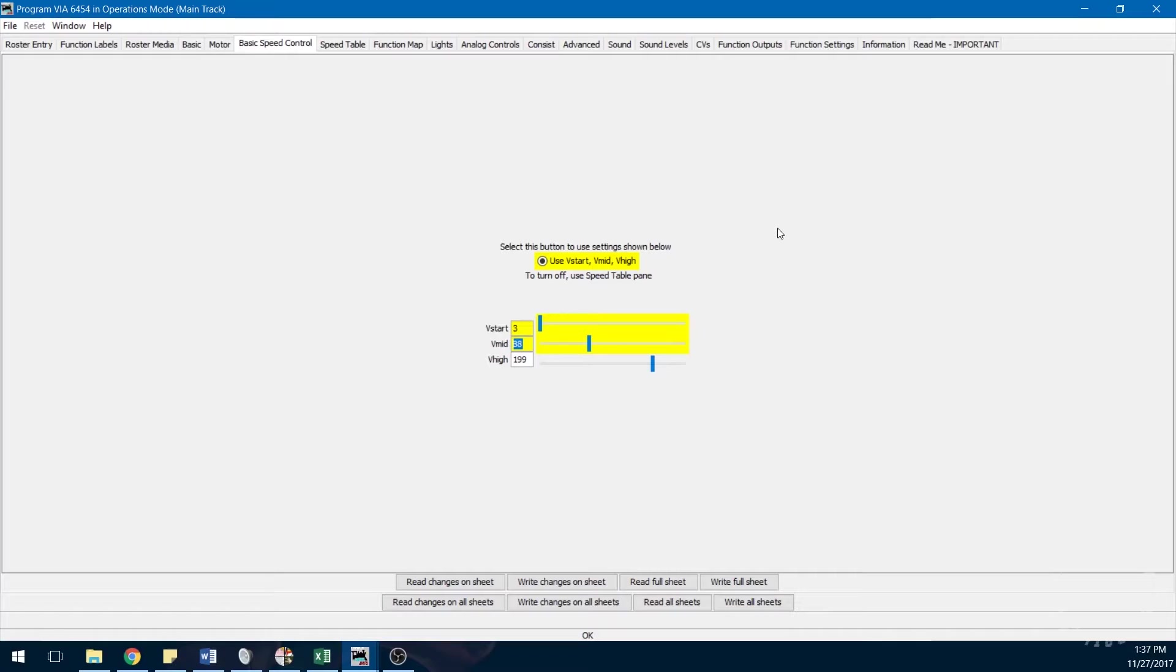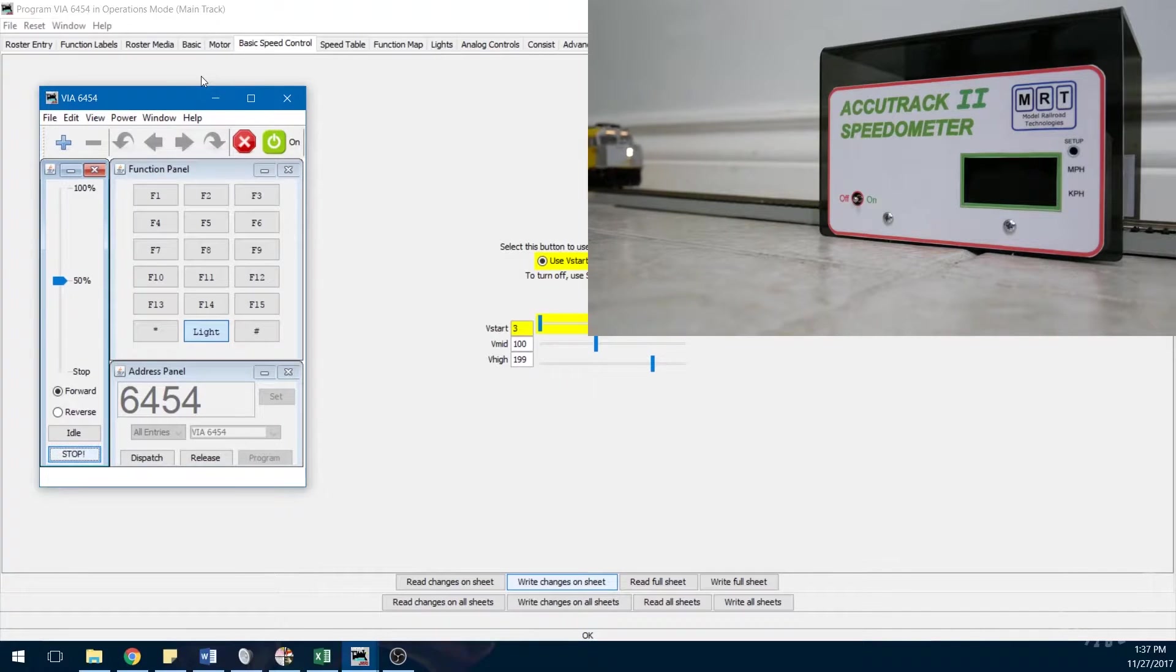After you have calibrated CV5, you can set the value of CV6 to about half the value of CV5, and when I set the throttle to 50%, the F40 moves at 25 scale miles per hour. If there's any discrepancies with regards to the value of CV6, you can increase or decrease its value to match the speed that you desire.